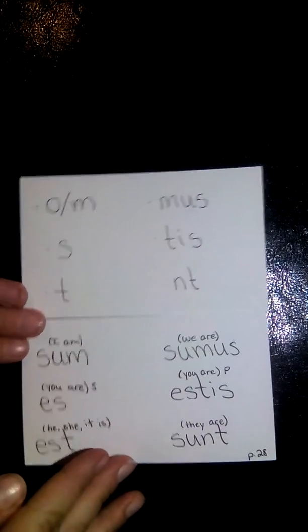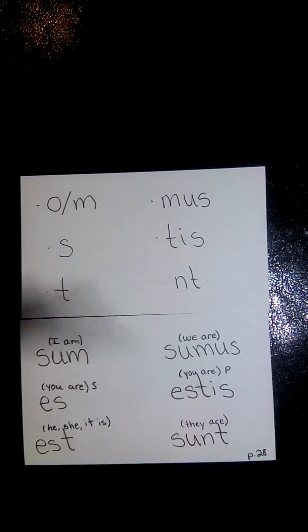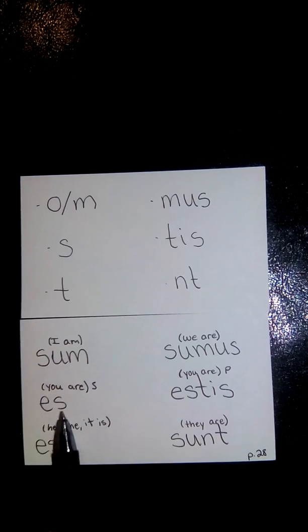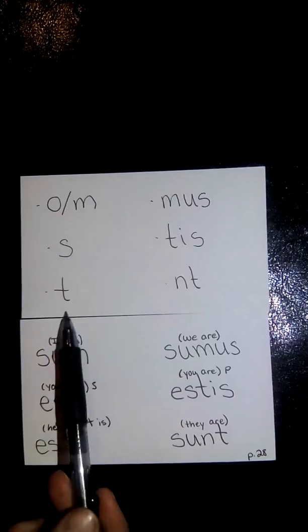And if we look down here we can line up the two and see that sum in the first person singular took the m ending. So we see sum. Second person singular has the s ending. Third person has the t ending.